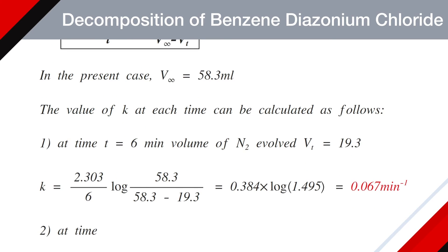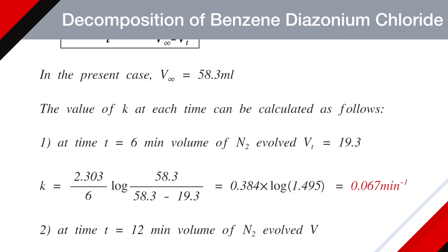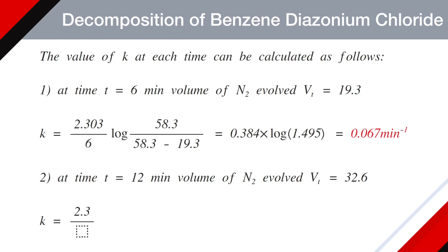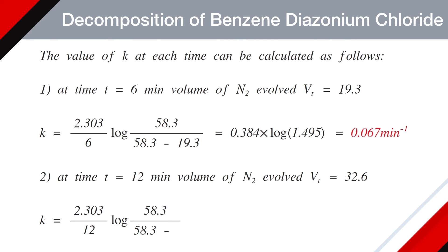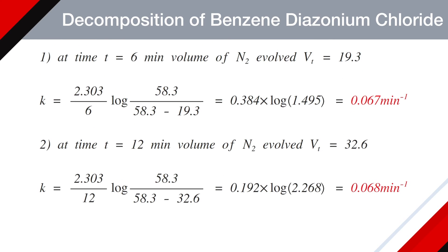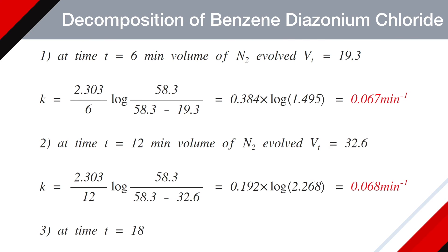Similarly, at time T equals 12 minutes, volume of nitrogen is 32.6 mL. So K becomes 2.303 divided by 12, log of 58.3 divided by (58.3 minus 32.6), which is 0.192 × log(2.268), and finally K = 0.068 min⁻¹.